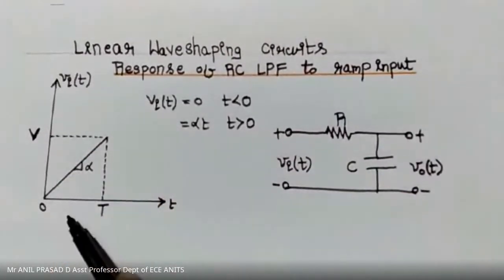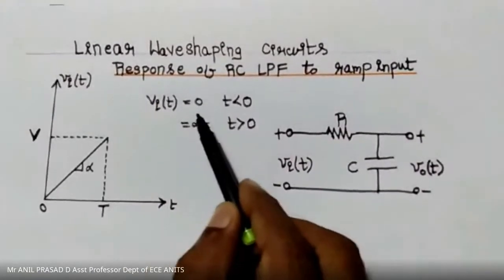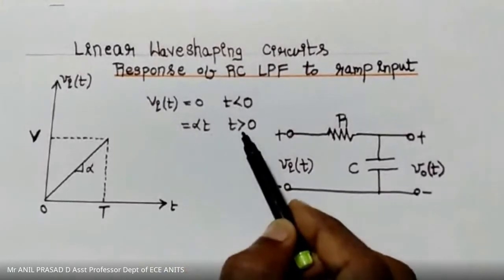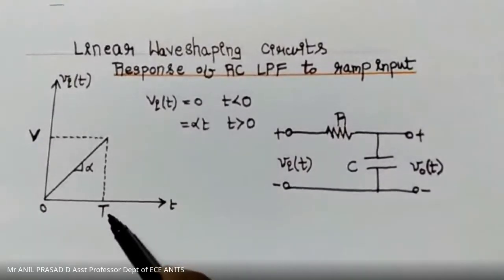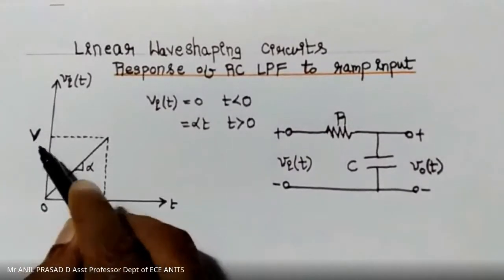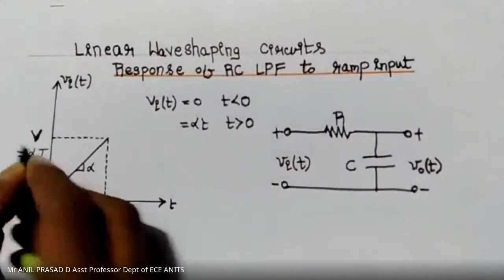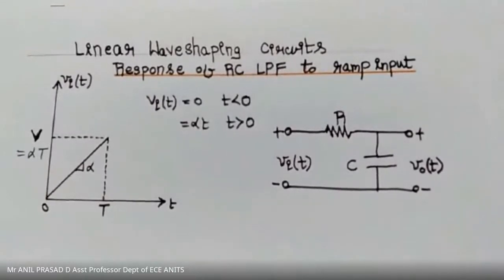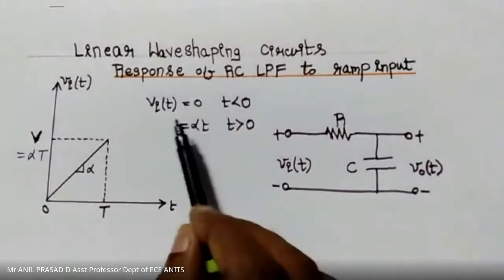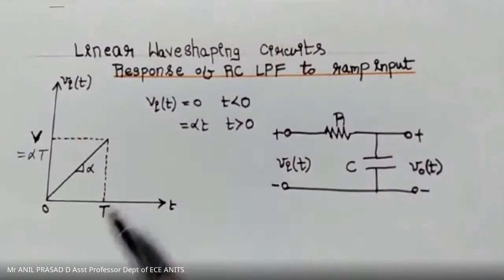The ramp input is graphically represented as shown and mathematically represented as: v_i(t) equals zero for t less than zero, and alpha*t for t greater than zero. In particular, at t equals capital T, the input is represented by capital V, so V equals alpha times capital T.